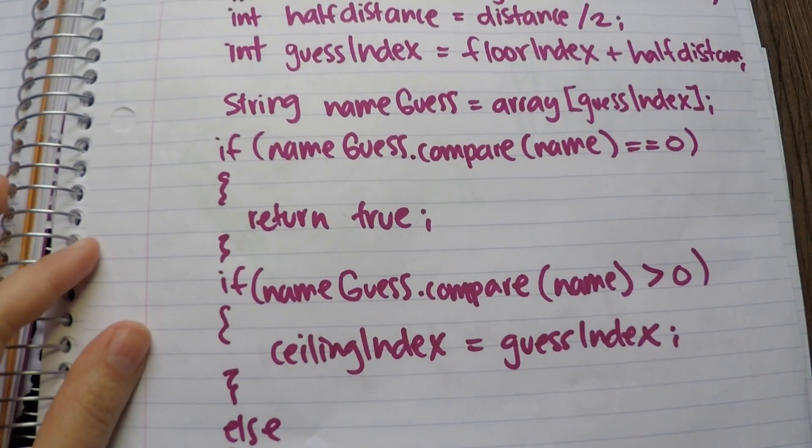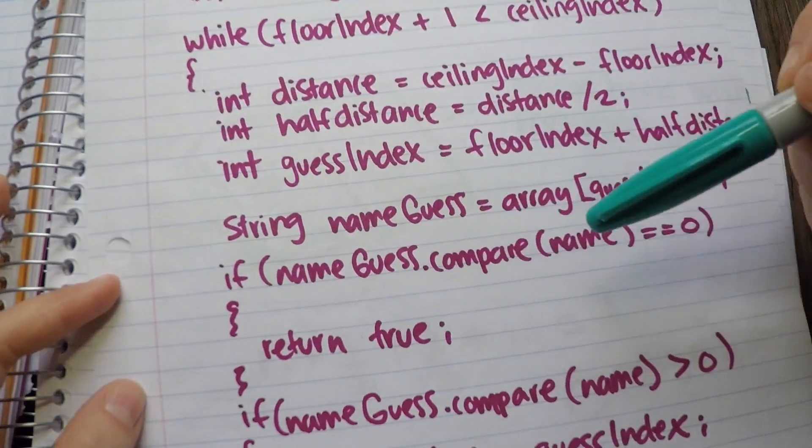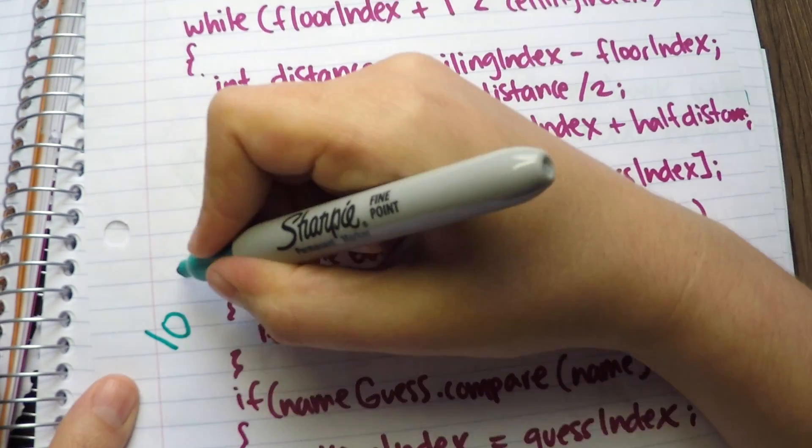So what's going on? In this while loop, we're dividing or cutting the array in half until we get the one name. This is logarithmic complexity.